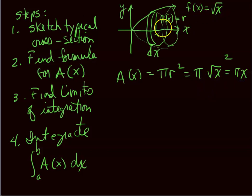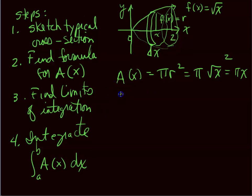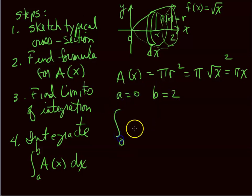Now we find the limits of integration. Let's say we want to find the volume up to x = 2. So we slice from 0 to 2. The limits of integration are a = 0, b = 2. We write the integral from 0 to 2 of π x dx.